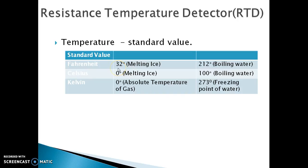For example, we know that the melting ice temperature in Fahrenheit scale is 32 degrees or the boiling water temperature in Celsius scale is 100 degrees. It was followed by the Kelvin scale.